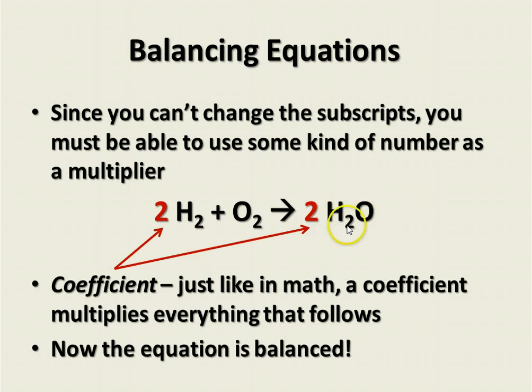you multiply each thing within that, so 2 times 2 is 4, 2 times 1 is 2, so that gives me 4 hydrogens, 2 oxygens, just like we have on the other side of the equation. Now the equation is balanced.